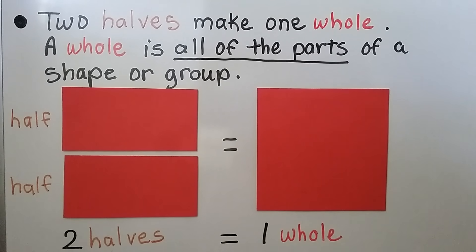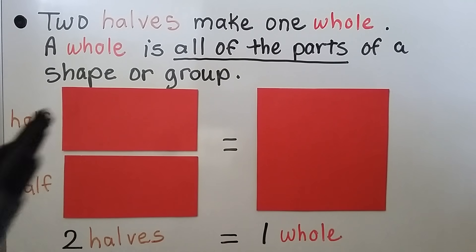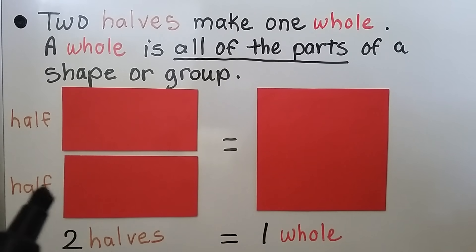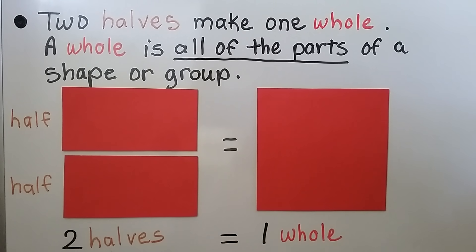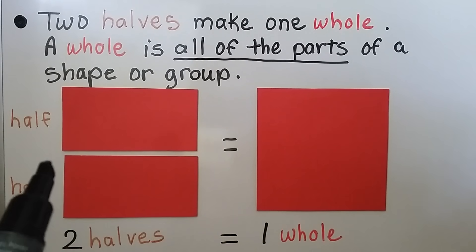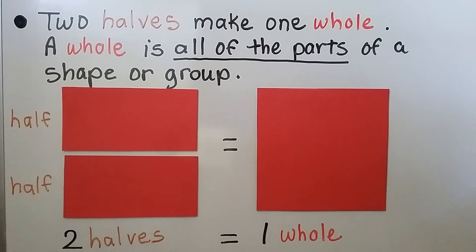Two halves make one whole, and a whole is all of the parts of a shape or group. Here we have a red square that's cut into a half and a half. We have two halves. Notice when it's plural, when there's more than one, the F turns into a VES. These two halves are equal to this one whole red square. We just cut it in half horizontally, and we made two halves.